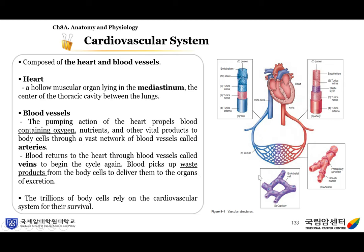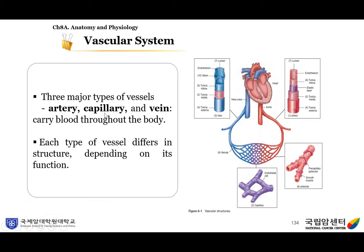This figure shows vascular structures. The red ones are arteries, the blue ones are veins, and the purple ones are capillary vessels. There are three major types of vessels: the artery, the capillary, and the vein. These carry blood throughout the body. Each type of vessel differs in structure depending on its function.